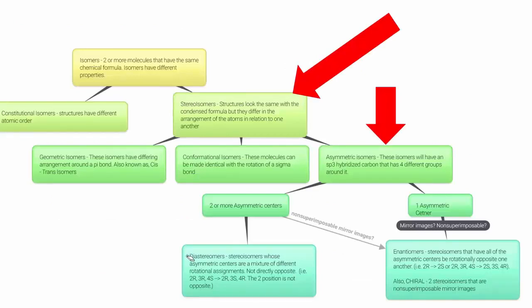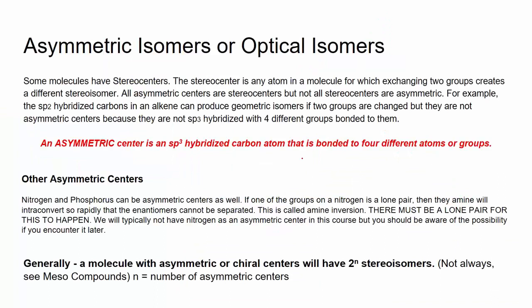Now we're going to look at asymmetric isomers, where students get confused the most, so take this part slowly. These isomers are going to have an sp3 hybridized carbon with four different groups around it — that's going to be crucial. These sp3 hybridized carbons with four groups are called asymmetric centers. They can also be called chiral centers — they're interchangeable words.